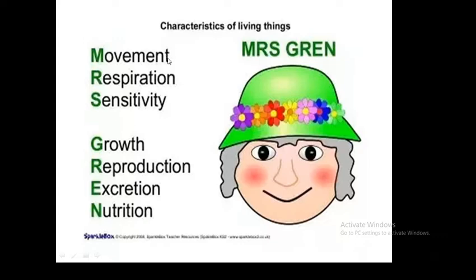Let's start first with movement. Movement is an action by an organism or part of an organism causing a change of position or place. Most single-celled creatures and animals move about as a whole. Fungi and plants can make movements with parts of their body. For example, plants can move towards light, and animals move with their whole body using their four limbs.